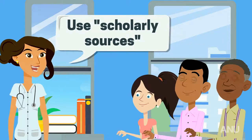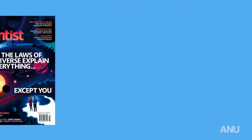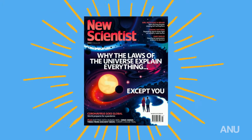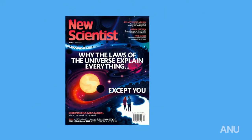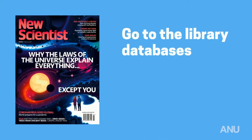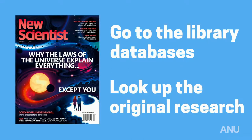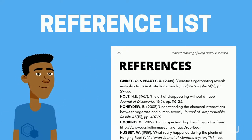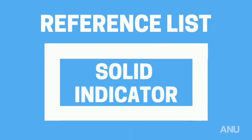Which is probably why lecturers tell us to use scholarly sources in the first place. So, even if the article is in a well-respected magazine like New Scientist, instead of citing it, go to the library databases and look up the original research that the article is referring to. While a reference list is not a guarantee that research is scholarly, it can be a solid indicator.